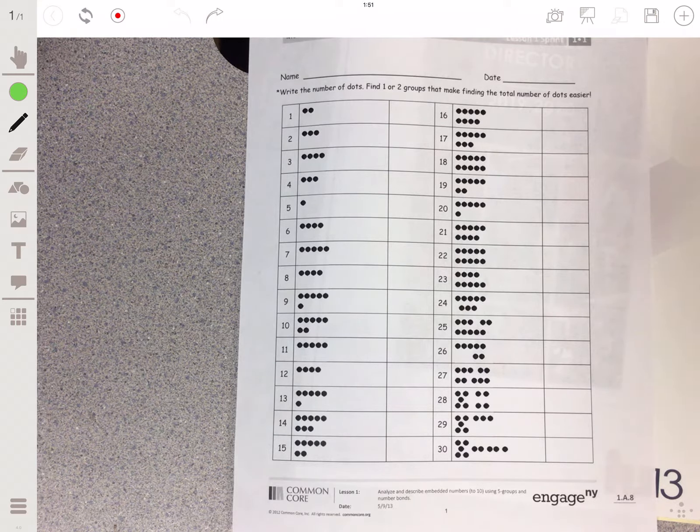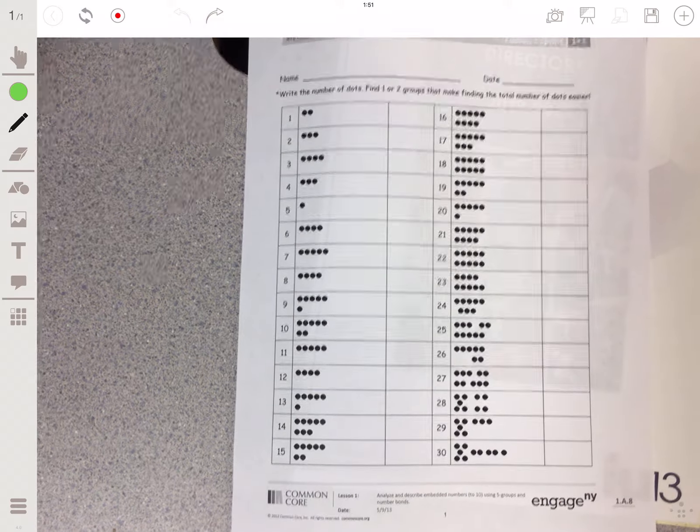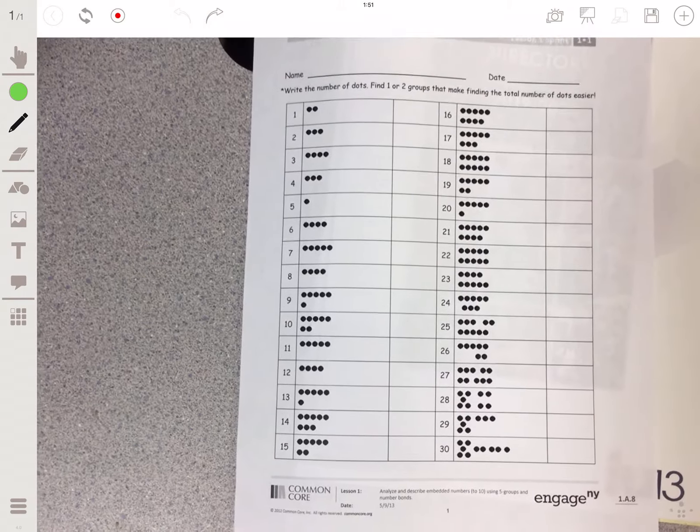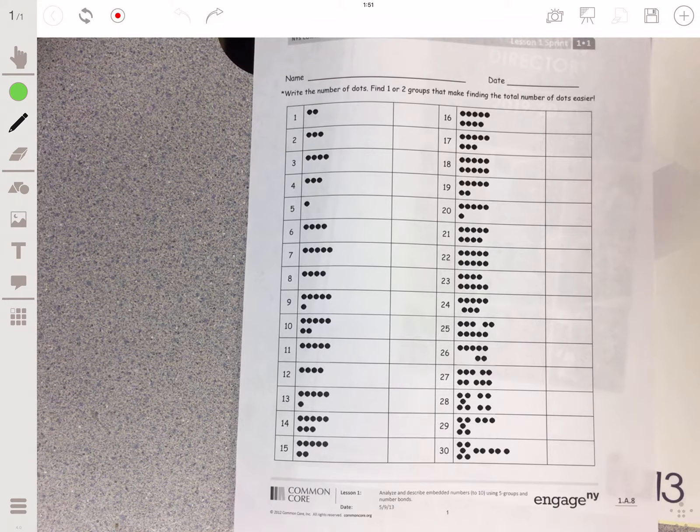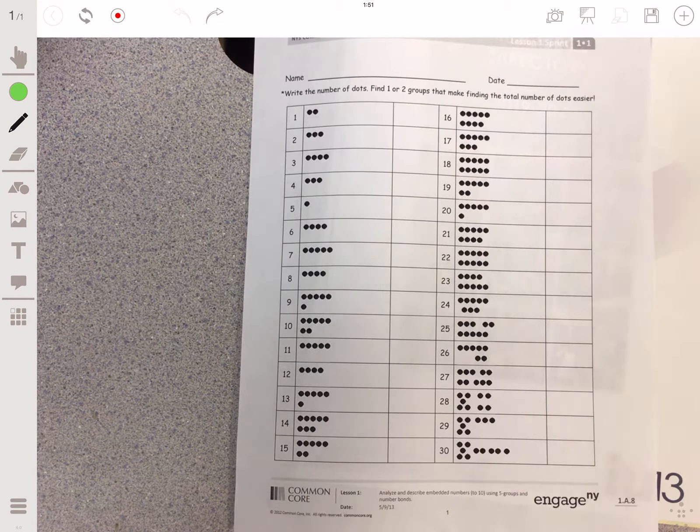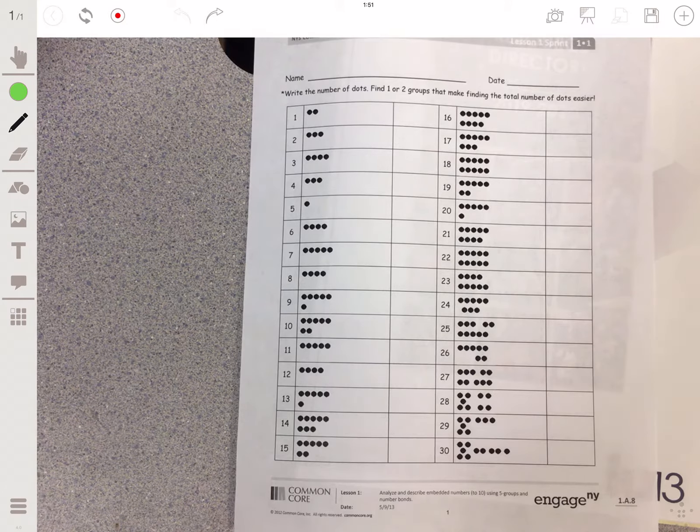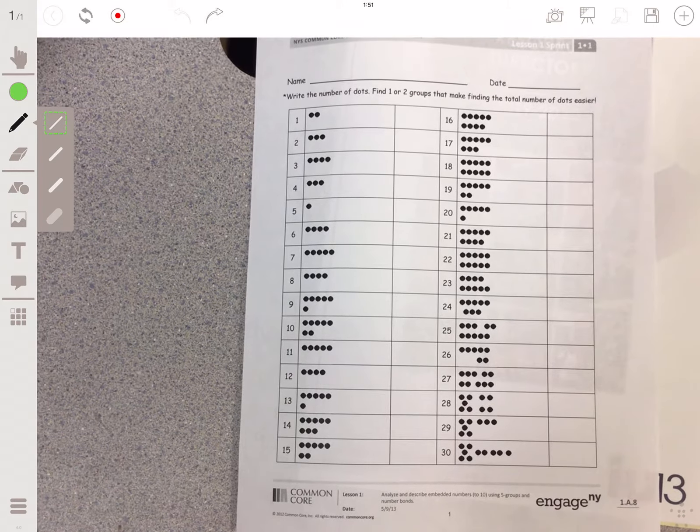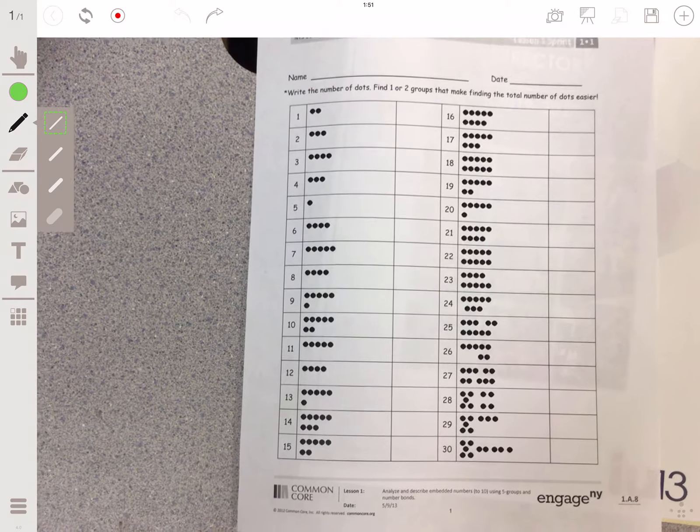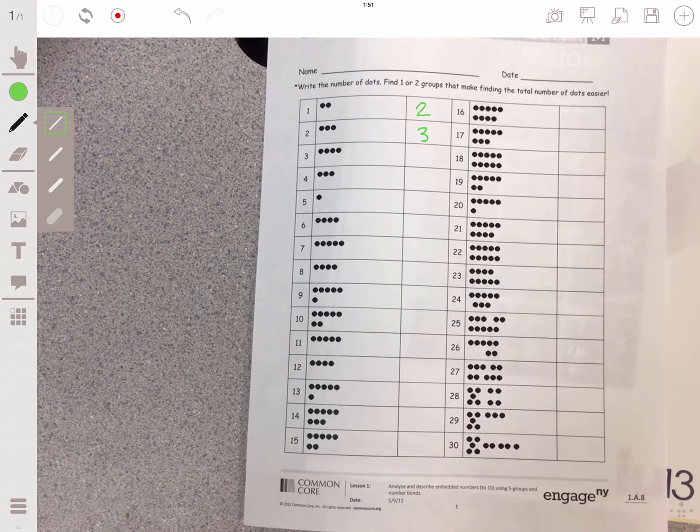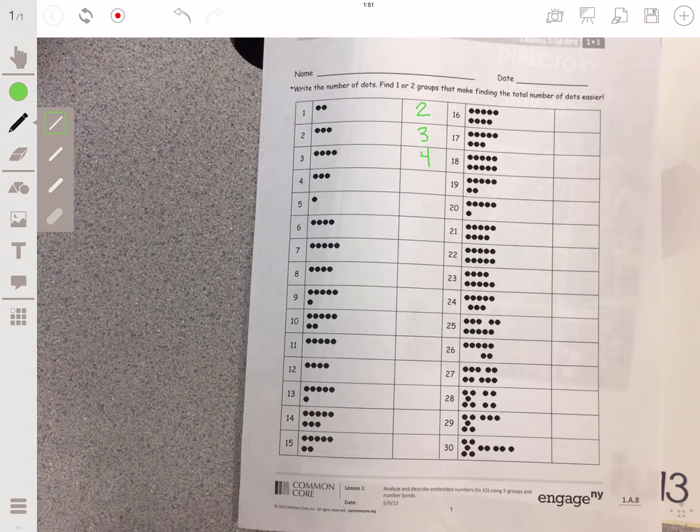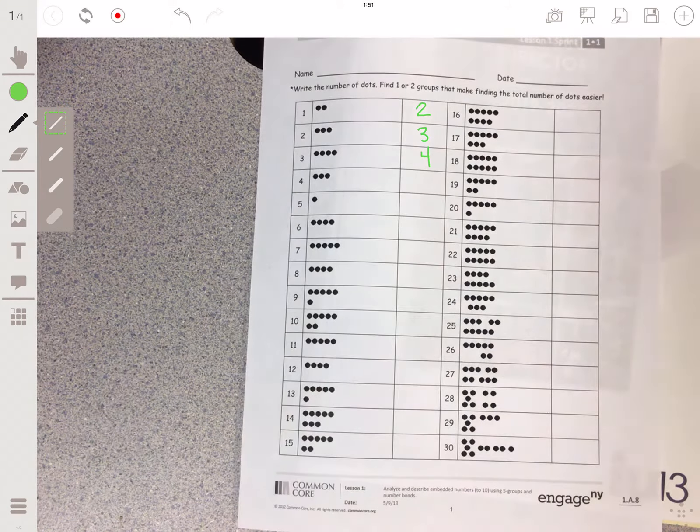But this time I don't actually have to physically mark up the paper. So if I wanted to model for my learners how to go ahead and do this sprint, I could simply use the tools that are built in here on Stage. I can come to the little pencil, choose my line thickness, and start to show them that yes, I can have two. One, two, three, four, so on within the sprint that I'm showing.